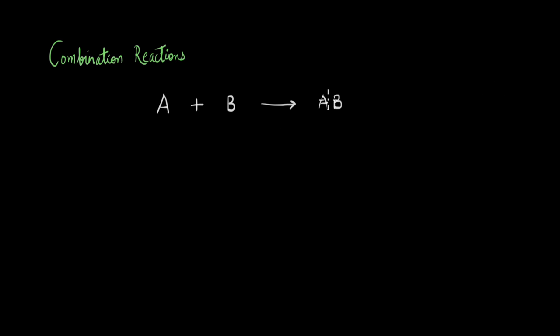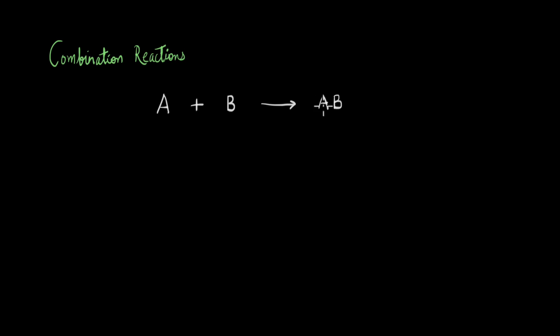Let's look at combination reactions. These are reactions in which two or more species combine to form a single product. We can represent it in this form where A and B combine to form product AB, and these can be free elements or compounds that lead to the formation of AB.